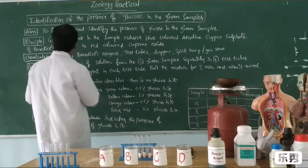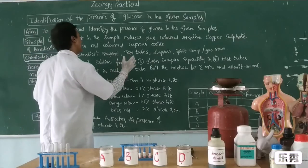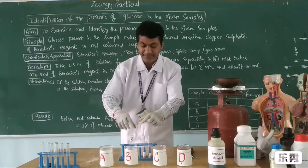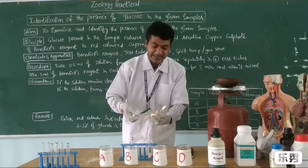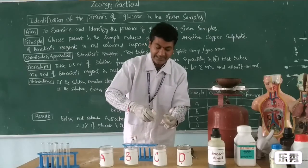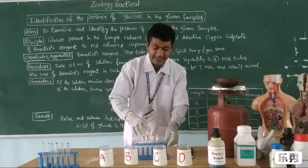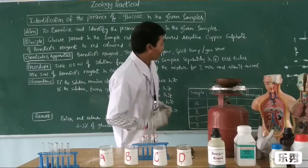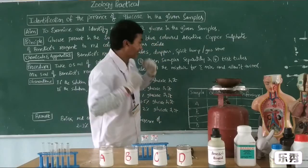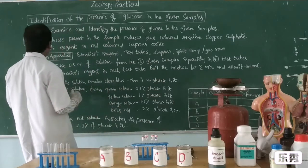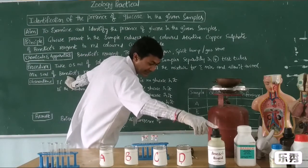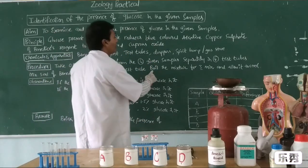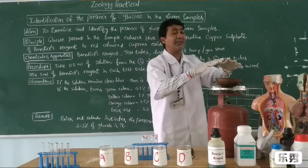Procedure: take 0.5 ml of solution from the four different samples separately into four test tubes. I am labeling them A, B, C, and D. Then mix 5 ml of Benedict reagent — this is the Benedict reagent — add 5 ml into each test tube. Then boil these test tubes for 3 minutes and allow them to cool.